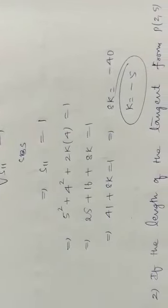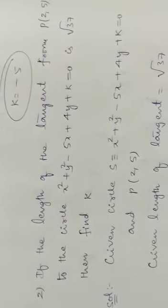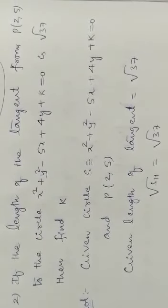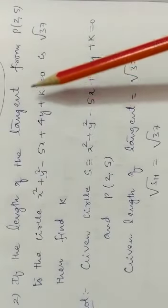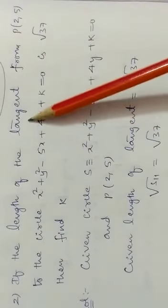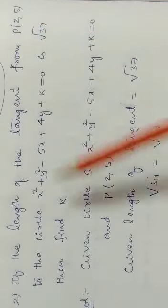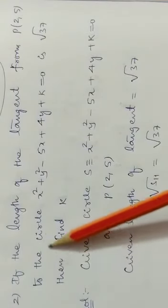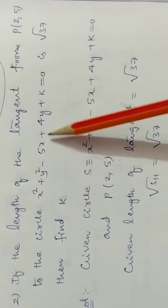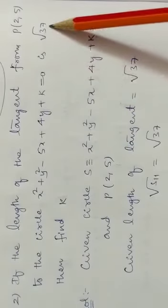Next, same model sum. If length of tangent from 2 phi - tangent from means this is an external point - to the circle x square plus y square minus 5x plus 4y plus k equal to 0, is root 37.